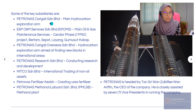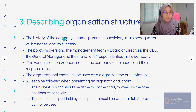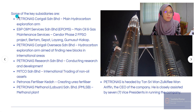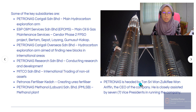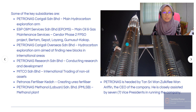Now we look at the management team, but before that, let's look at some key subsidiaries. Under Petronas itself there are key subsidiaries: Petronas Carigali, ENP, ONM Services, Petronas Carigali Overseas, Petronas Research, Mitco, Petronas Fertilizer Kedah, and Petronas Methanol. Regarding the organisation, Petronas is headed by Tan Sri Wan Zoukifli Wan Arifin, the Chief Executive of Operations of the company. He is closely assisted by seven vice presidents in running the company. That is how you describe the company.